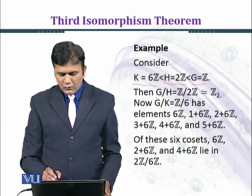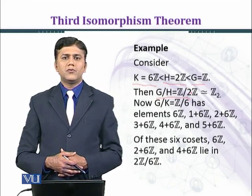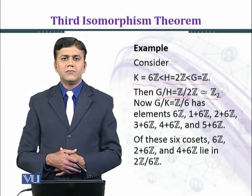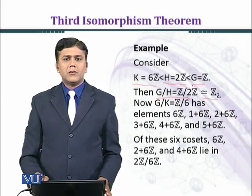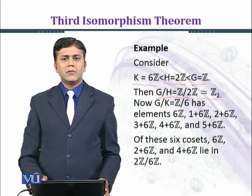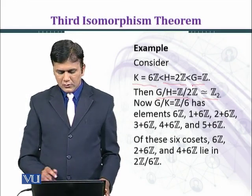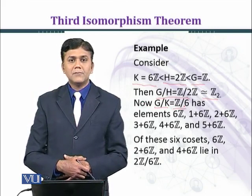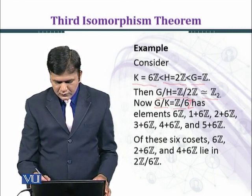Then G over H equals Z over 2Z, which is isomorphic to Z₂. Here we mod out by 2Z, so we have two coset classes: the set of all even numbers and the set of all odd numbers. Now G over K equals Z over 6Z.